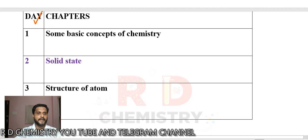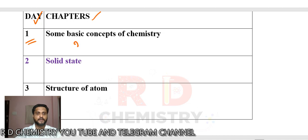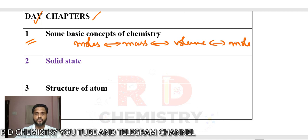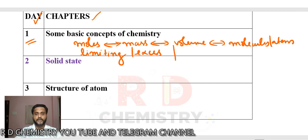In the first column I have given days 1 to 25, and in the next column the chapters. On day 1, you can practice some basic concepts of chemistry. Concentrate on how to calculate number of moles, how to convert moles into mass, mass into volume, and moles into molecules or atoms. Also concentrate on limiting reagent and excess reagent. Then how to calculate molarity, molality, and mole fraction.